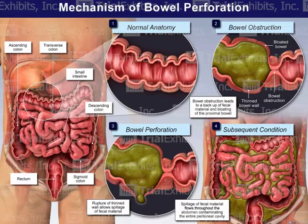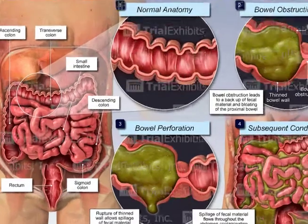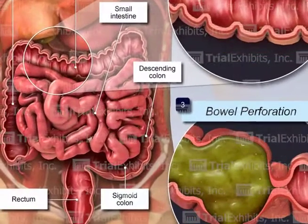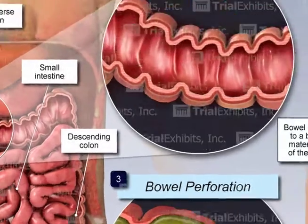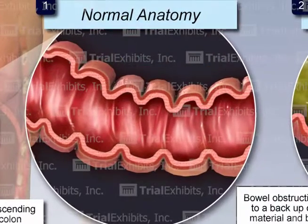In exhibit number one, the mechanism of bowel perforation, we began with an anterior cutaway view of the abdomen, giving a complete orientation to the abdominal architecture. This also showed the enlargement of the transverse colon.